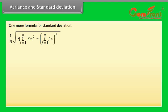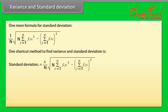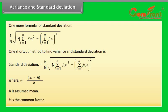An alternative formula for standard deviation is (1/N) × √[N·Σ(Fᵢ·Xᵢ²) − (Σ Fᵢ·Xᵢ)²]. A shortcut method uses Yᵢ = (Xᵢ − A) / H, giving standard deviation = (H/N) × √[N·Σ(Fᵢ·Yᵢ²) − (Σ Fᵢ·Yᵢ)²], where A is the assumed mean and H is the common factor.